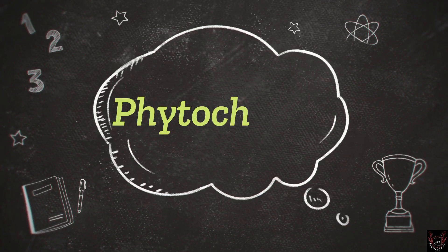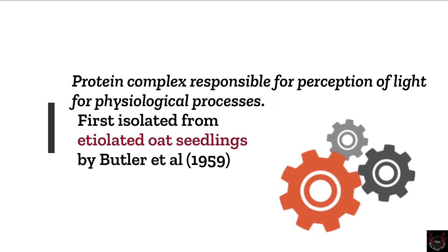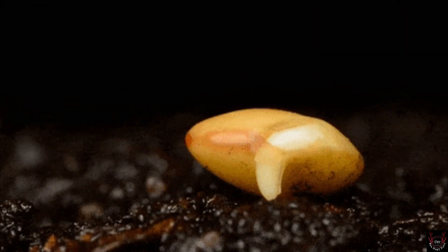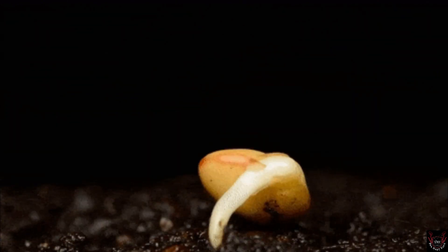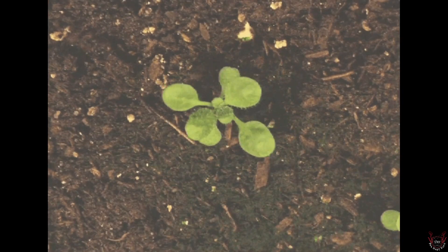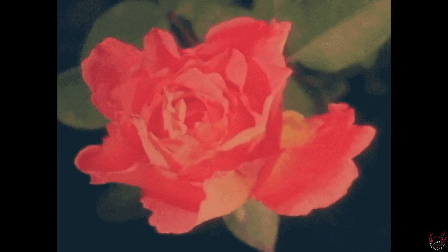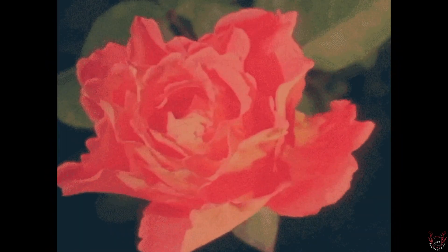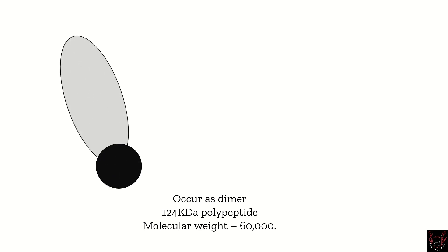Phytochrome is a photoreceptor protein pigment which is sensitive to a particular type of light, absorbs a particular wavelength, and initiates major physiological functions. These were first isolated by Butler et al. from the etiolated seedlings of oats. Its structure is very simple — it's a dimer having two identical subunits.